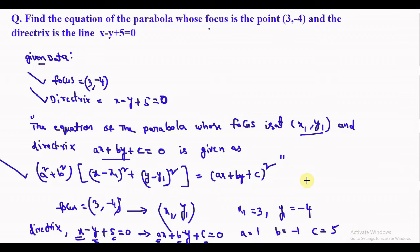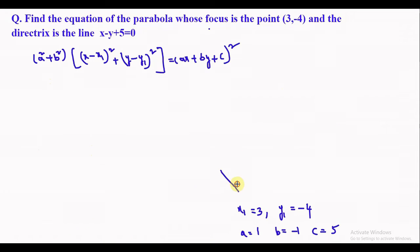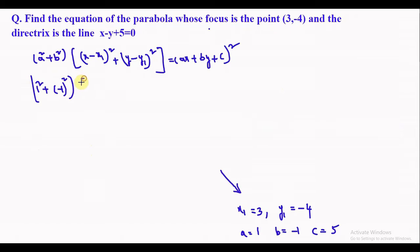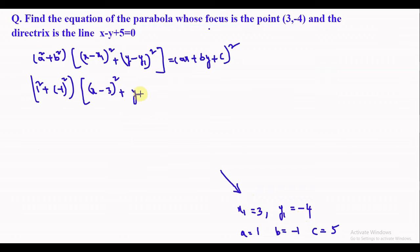Now we will substitute the values in this equation. a squared plus b squared gives (1 squared plus 1 squared), into (x minus x1) whole square is (x minus 3) whole square, plus (y minus y1) whole square is (y minus minus 4), that is (y plus 4) whole square.